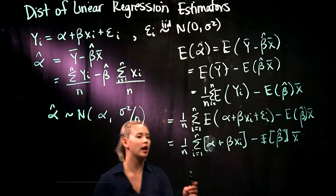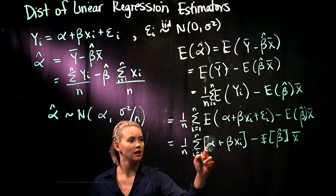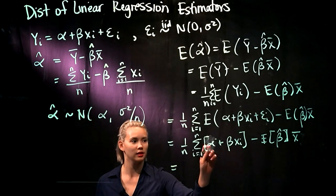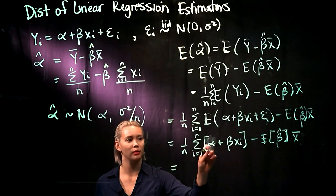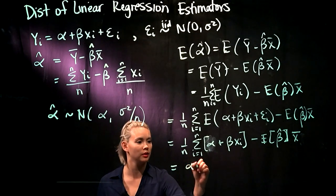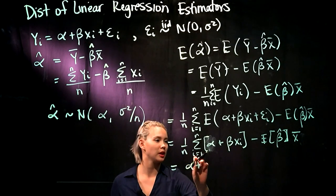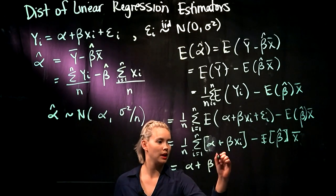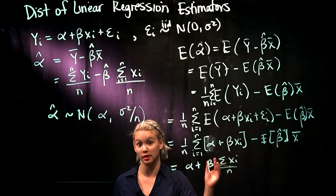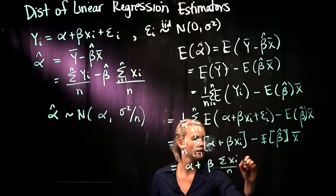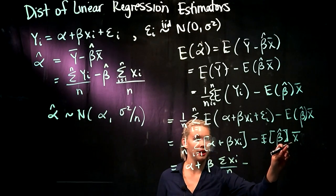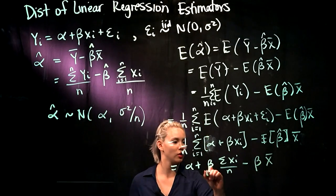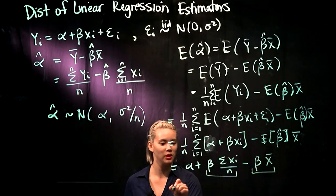So this is what we have so far. We have the sum — we're adding alpha plus beta x_i up n times. If we're adding up alpha n times, we get n times alpha. So n times alpha divided by n gives us just alpha. For the next piece, if we sum beta x_i, we end up with beta times the sum of x_i's divided by n, which is of course x_bar. And the expectation of beta_hat is just beta, and then we have x_bar — so this piece cancels that piece, and we just end up with alpha.